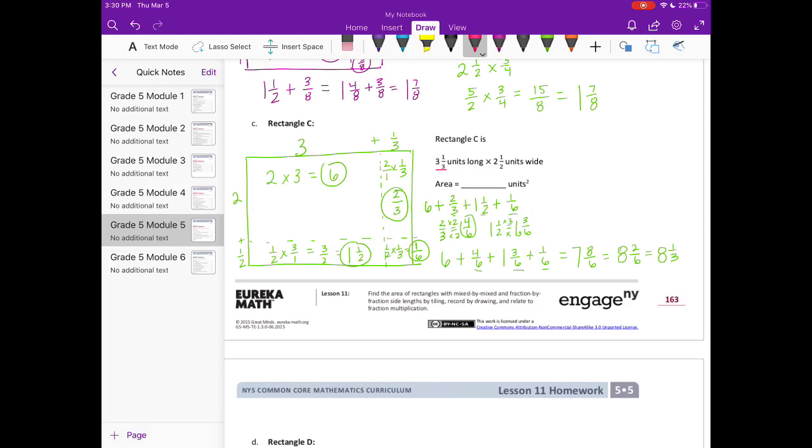Now multiply to check: 3 and 1 third times 2 and 1 half equals 10 thirds times 5 halves, which is 50 sixths. Dividing: 6 times 8 is 48, so 6 goes into 50 eight times. That's 48 sixths with 2 left over, which is 8 and 2 sixths or 8 and 1 third units squared.